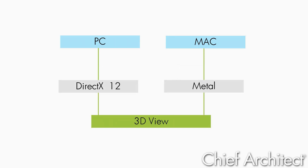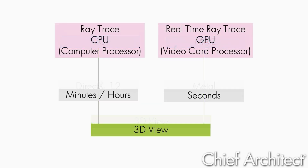Both Mac and PC have 3D interfaces: DirectX on the PC and Metal on the Mac. These interfaces are lower level than OpenGL, which means it's more work for us to initially support them, but since they are platform-specific, they can be more efficient and faster.